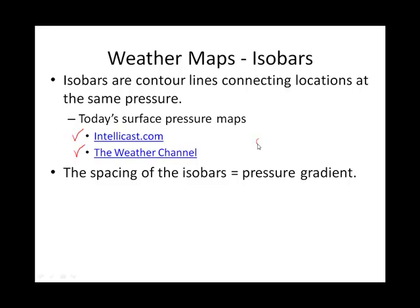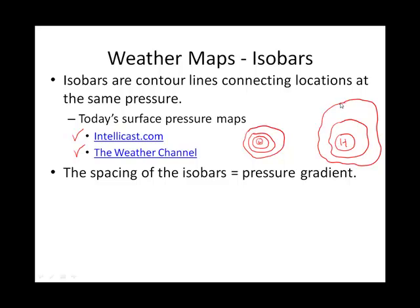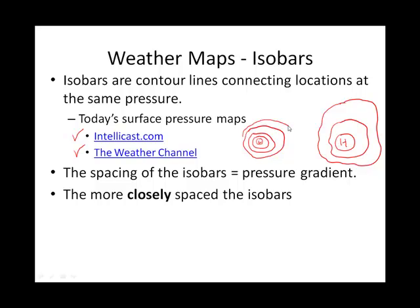I'll give you a couple of different scenarios. We'll have some sort of central low — I'll put an L in the center — and I'm going to draw these isobars pretty close together. Versus a central high pressure, where the isobars will look like a bullseye too, but they'll be blobbier, with greater spacing between each change in barometric pressure. The spacing makes a difference and changes from day to day and location to location. The more closely spaced the isobars, the steeper the pressure gradient.